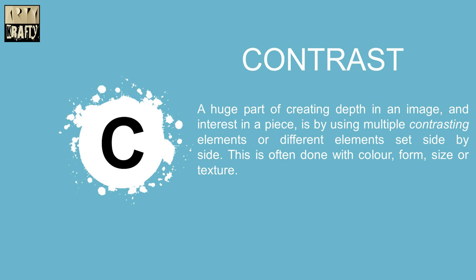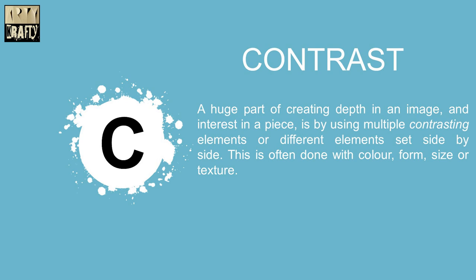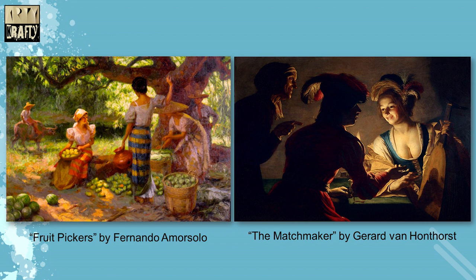A huge part of creating depth in an image and interest in a piece is by using multiple contrasting elements, or different elements set side by side. This is often done with color, form, size or texture. The left example is Fruit Pickers by Fernando Amorsolo, and the second painting is The Matchmaker by Honthorst.